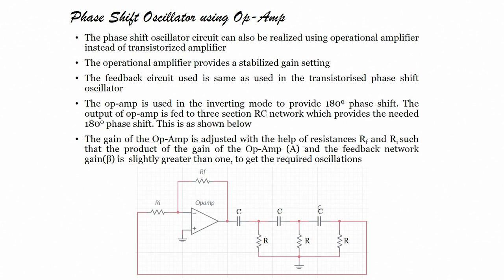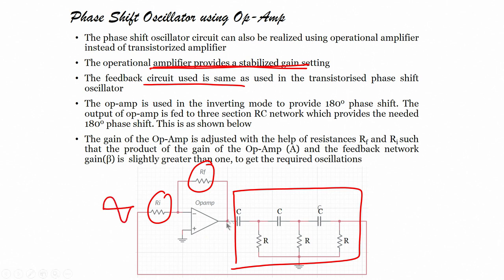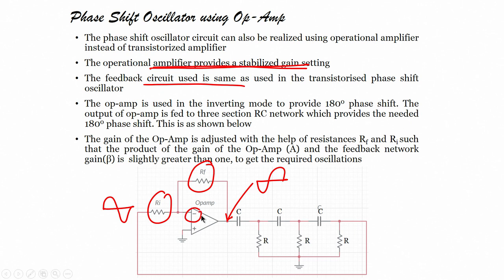To design a phase shift oscillator using an operational amplifier: the op-amp provides a stabilized gain setting and the feedback circuit used is the same RC network. The advantage is that the amplification factor can be changed by changing the values of R_F and R_I. The output of the inverting op-amp has a 180-degree phase shift.